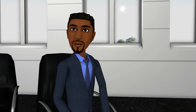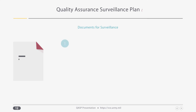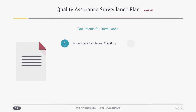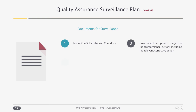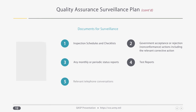That's right, Beverly. Documentation of surveillance activities on contractor performance are an essential part of the COR contract file that needs to be kept on record. Documentation may consist of inspection schedules and checklists, government acceptance or rejection, non-conformance actions including the relevant corrective action, any monthly or periodic status reports, test reports, relevant telephone conversations, and meeting minutes.